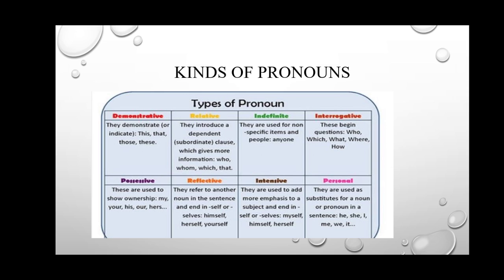That type is called the demonstrative pronoun. Next is the relative pronoun — they introduce a dependent clause which gives more information. They relate two things from one sentence. For example: 'She is prettier than her' — here 'her' is a pronoun that makes a comparison between two people using a relative pronoun.